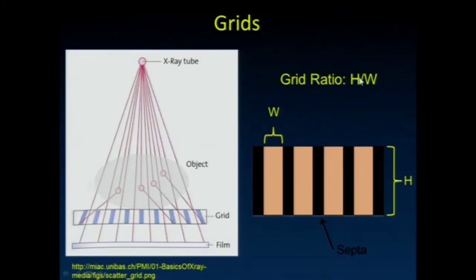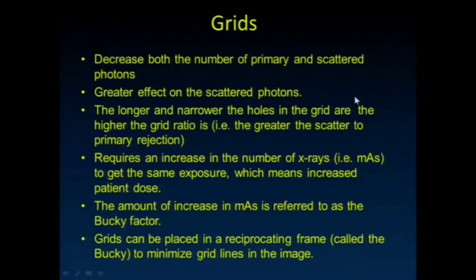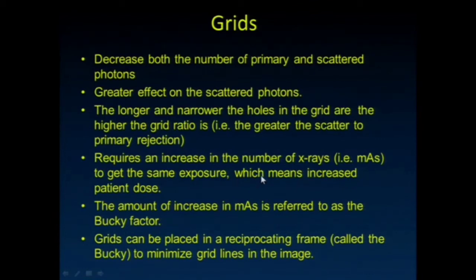There's that grid ratio — the height of the holes divided by the width of the holes. Grids decrease both primary and scatter, with a greater effect on scatter. The longer and narrower the holes are, the more rejection they give. Grids always require an increase in the number of X-rays because the number of X-rays hitting the detector goes down with the grid, so you've got to provide an increased dose to that patient. The amount of increase in mAs required is referred to as the Bucky factor, and that represents an increased dose to the patient.